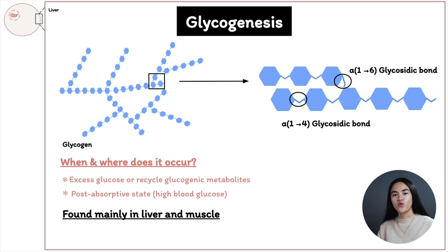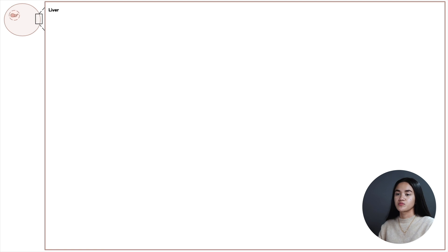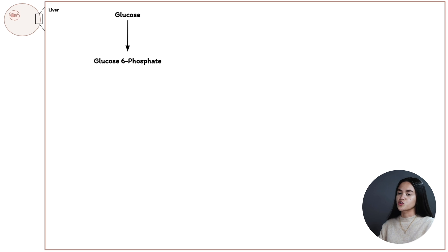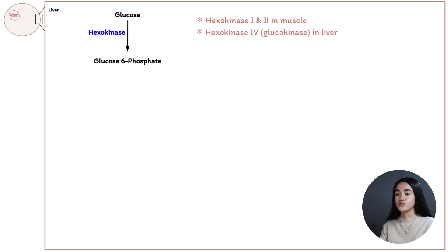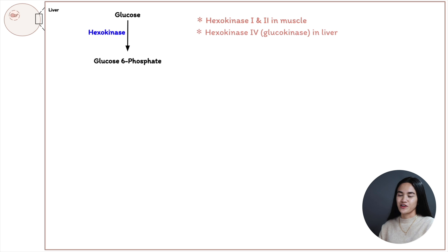Glycogen synthesis has multiple steps and requires enzymes and metabolic intermediates. Starting with glucose, it is converted to glucose-6-phosphate by adding a phosphate group onto the 6-carbon. This is done by hexokinase 1 and 2 in muscle, and hexokinase 4 — known as glucokinase — in the liver. Glucose-6-phosphate is the starting molecule of glycogenesis and can also enter glycolysis or be converted to free glucose in the liver.